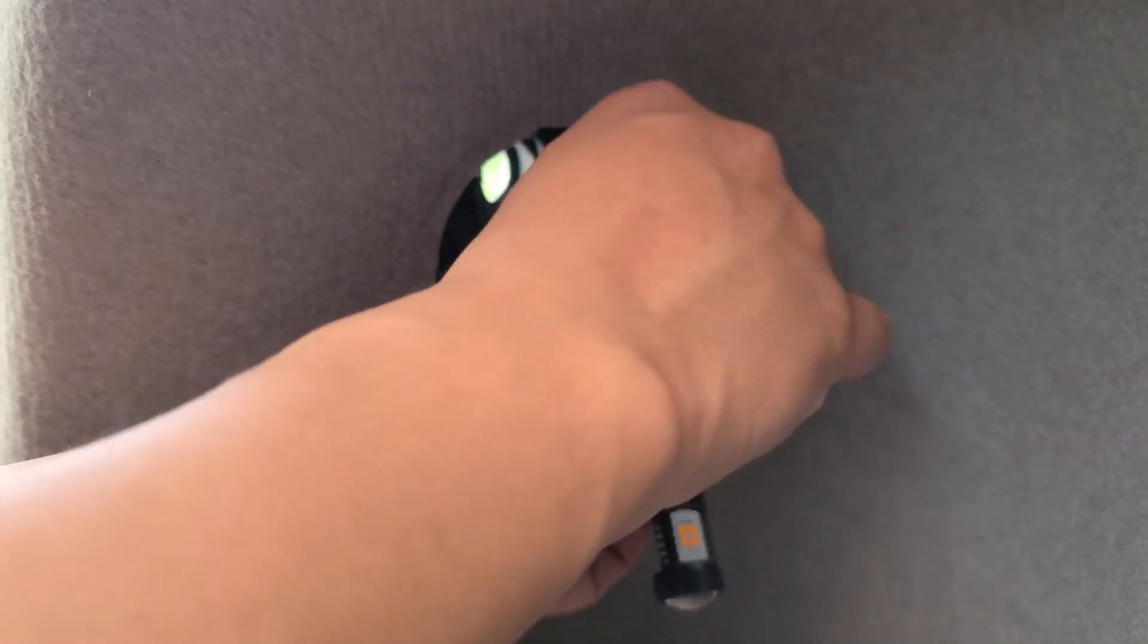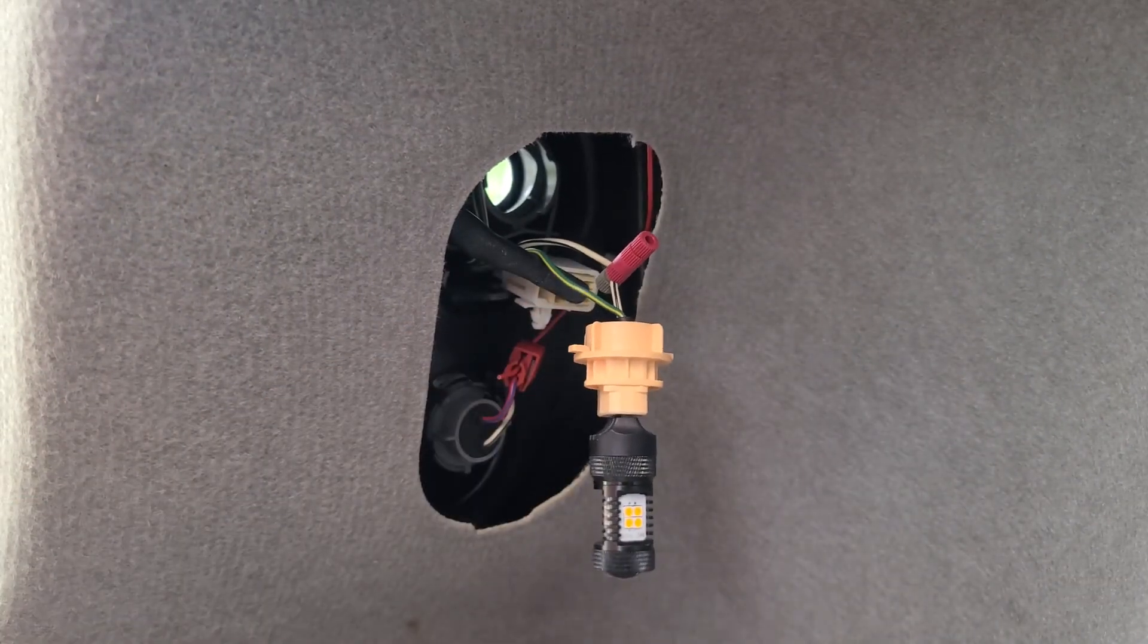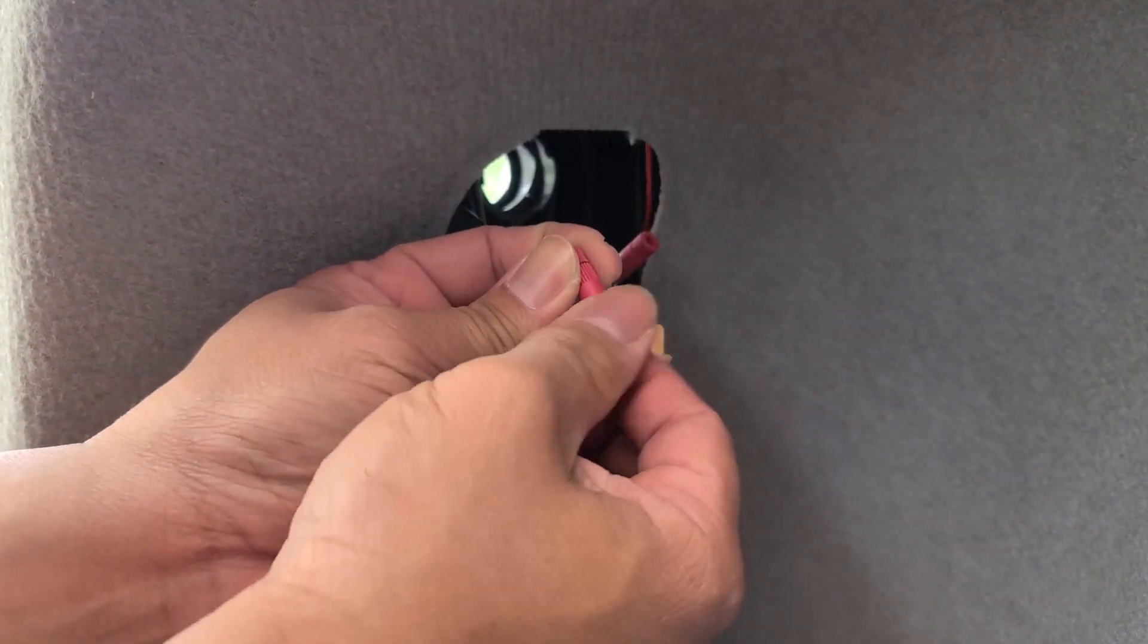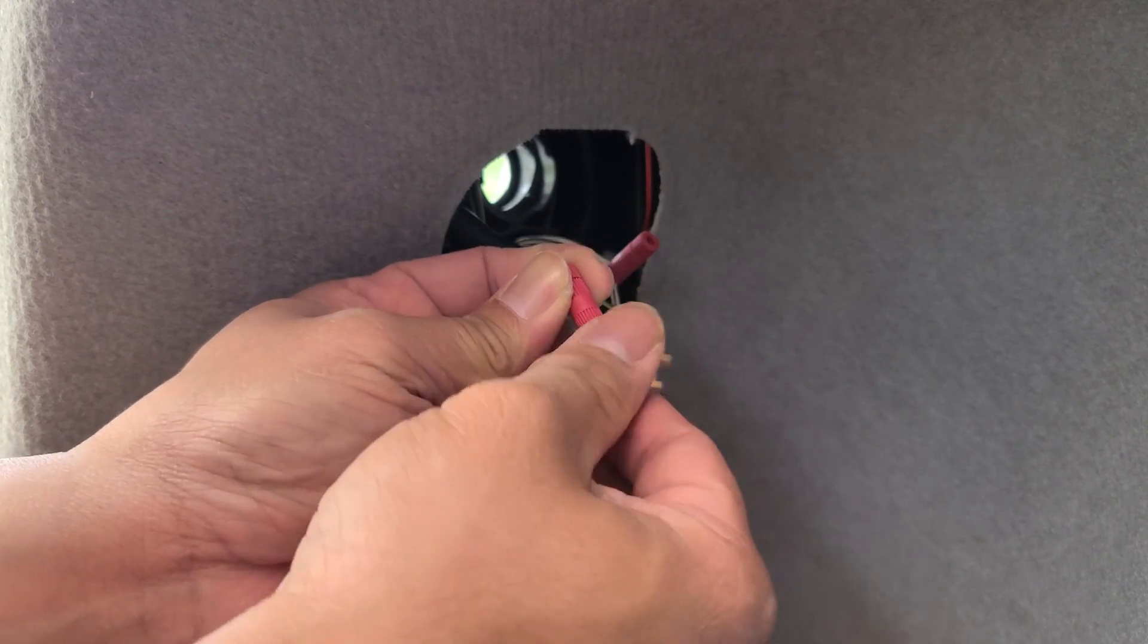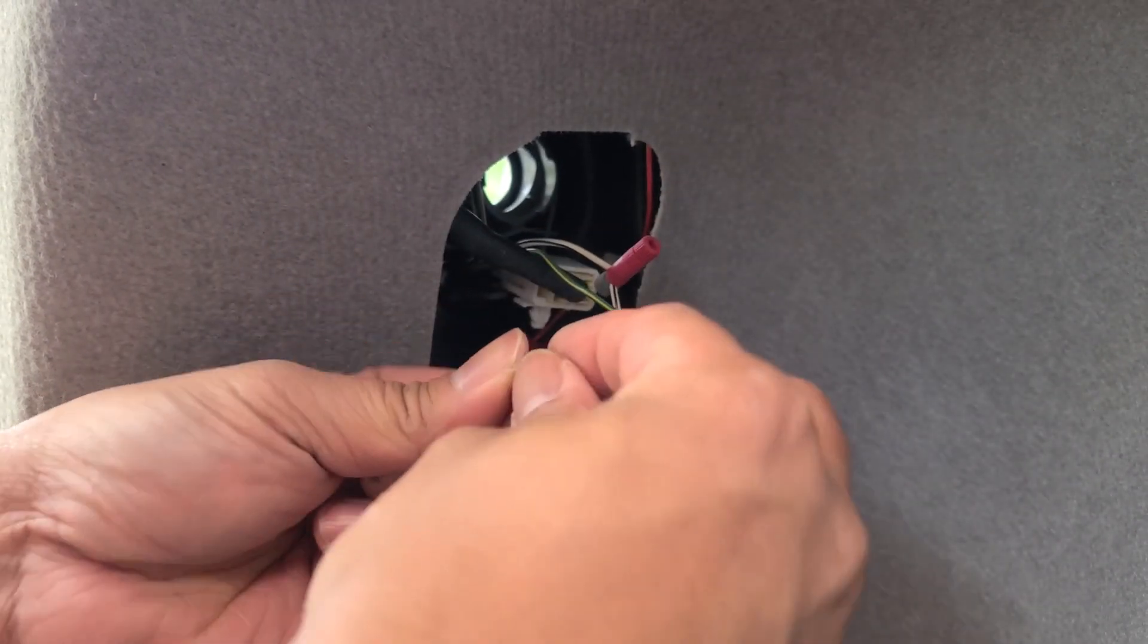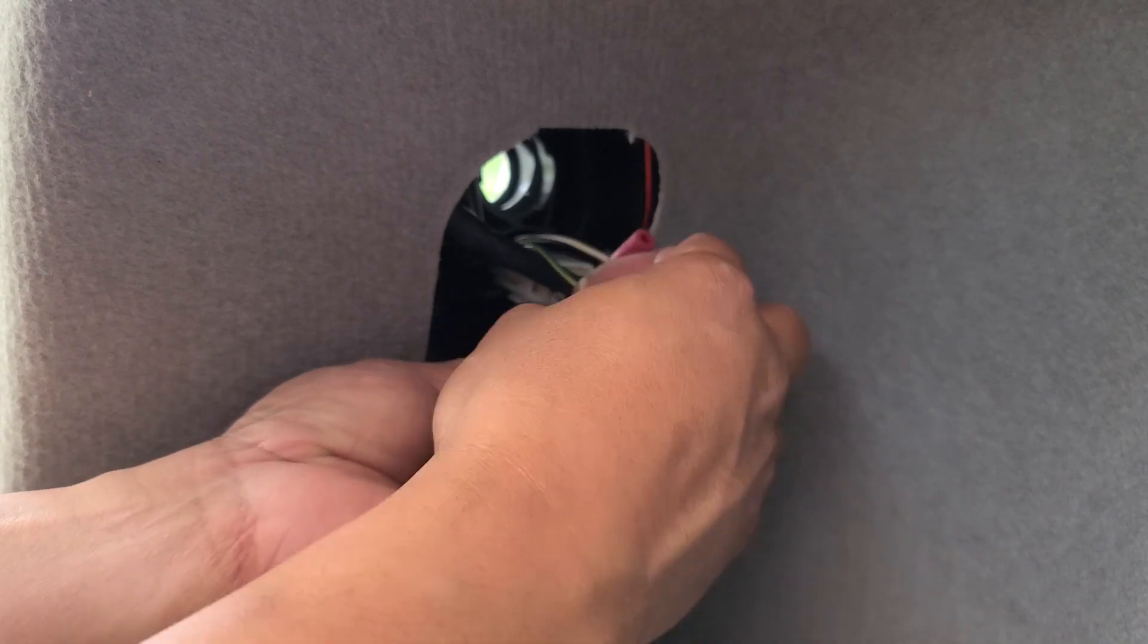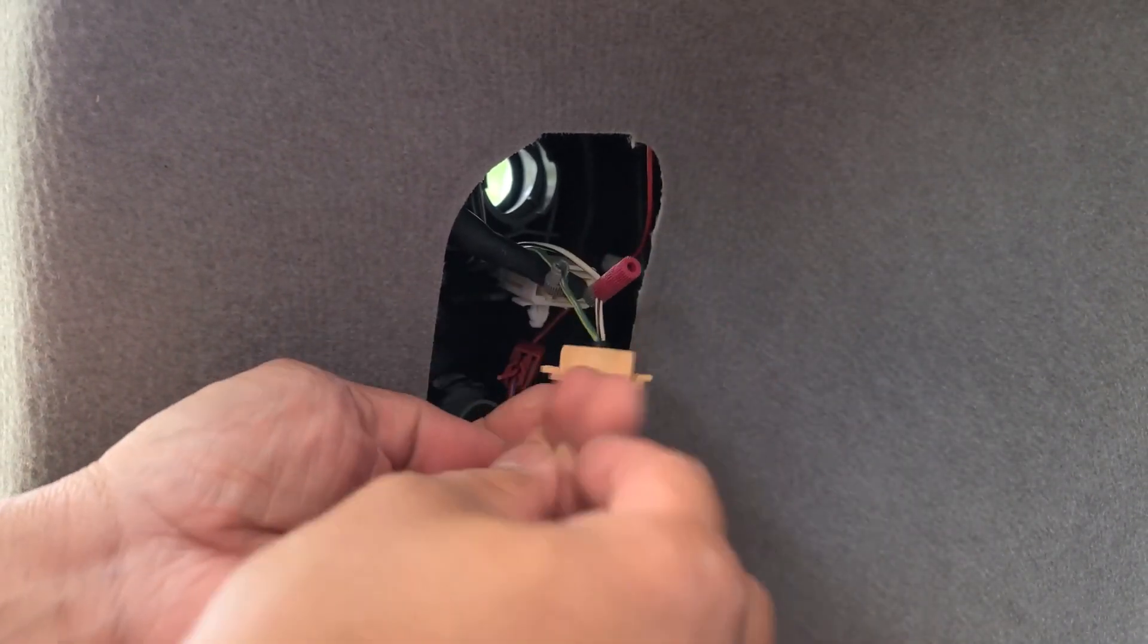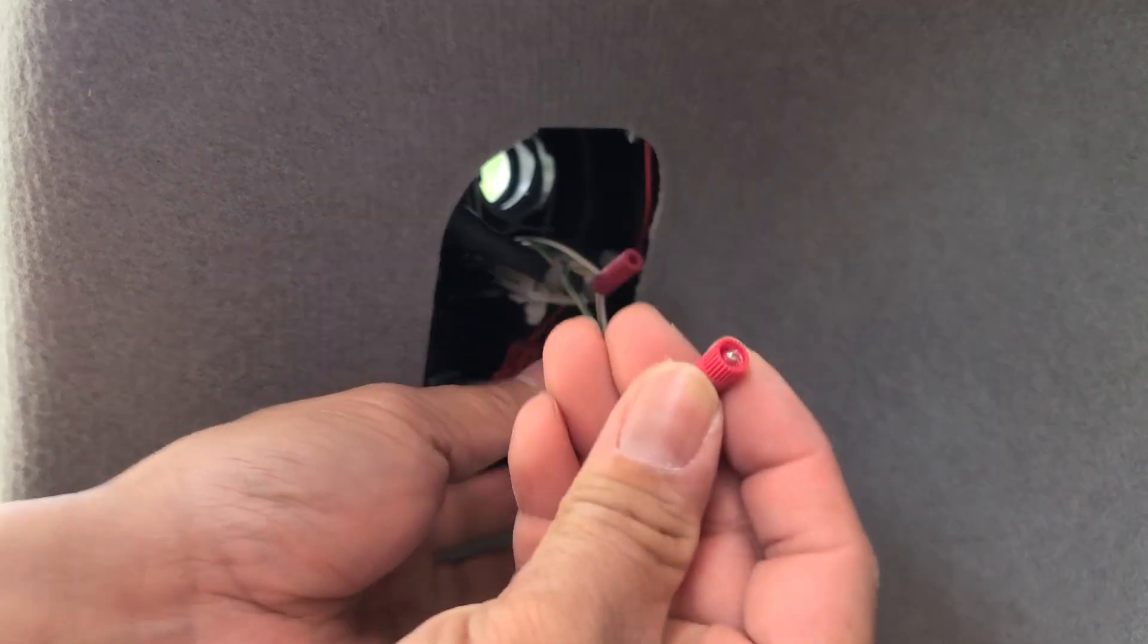I did one side. I'm going to do one more, unscrew the gray part. I'm going to do one side. Feed that through the bottom. Screw it back in.